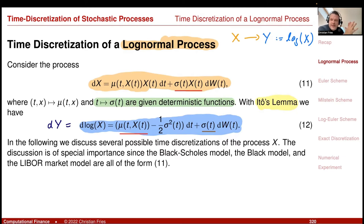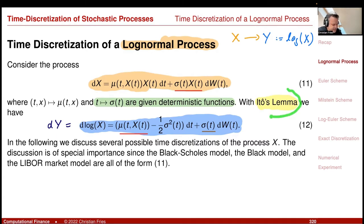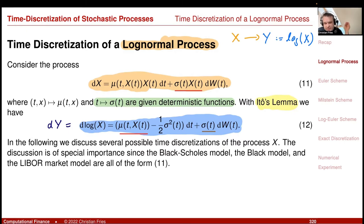This is actually a far more important technique than the improvements from Euler to Milstein to predictor-corrector: using Itô's Lemma to move to a different state space, performing the discretization there, and then transforming the discretized variable back to the original state space. This is a very powerful approach.